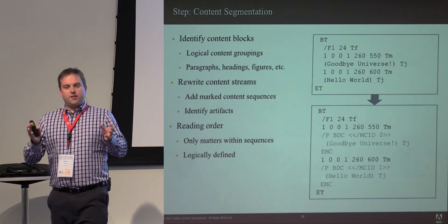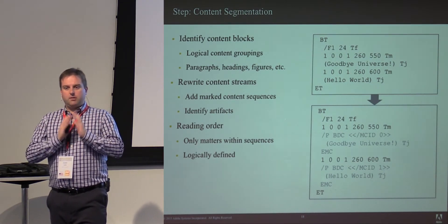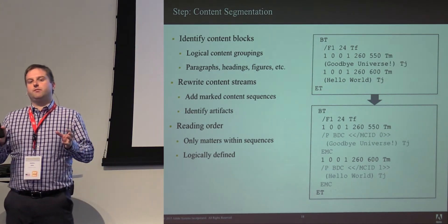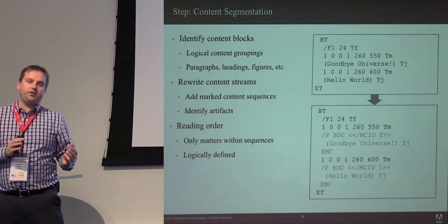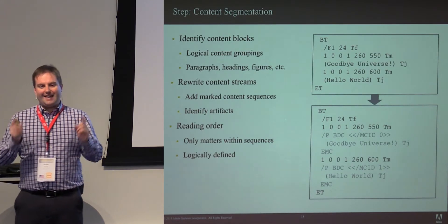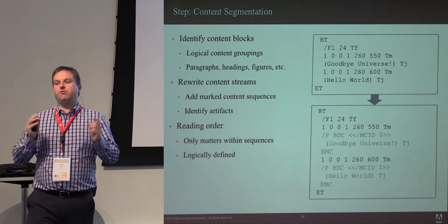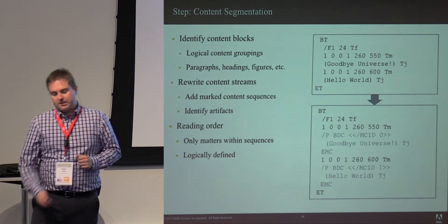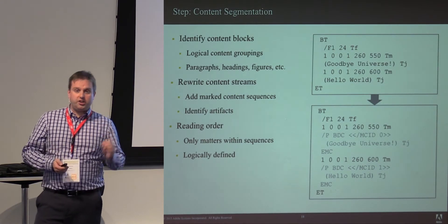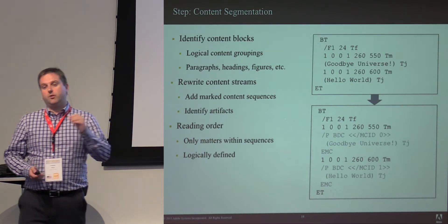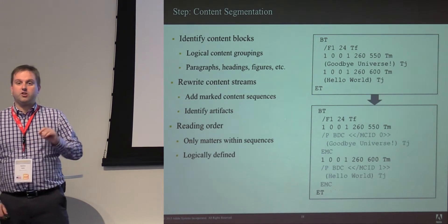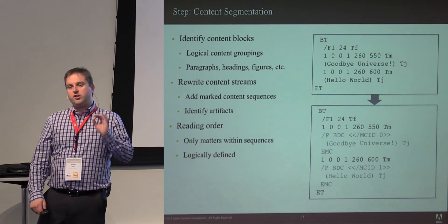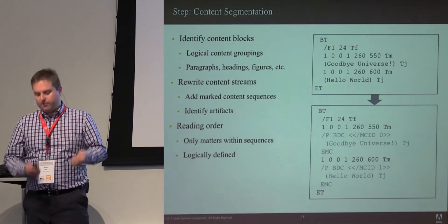Within each piece of content, reading order is mandatory. In Tagged PDF, you can break up content streams and put them in different orders for visual effects, but within any block of content it has to be in reading order — otherwise there is no deterministic manner to extract that content. Reading order is logically defined; it's not defined by the content order on the page. The logical order is the order of content in the document in a Tagged PDF.